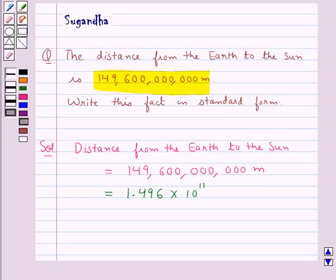So we get the distance from the Earth to the Sun is equal to 1.496 multiplied by 10 to the power 11 meters. Thus our final answer is 1.496 × 10^11 meters.